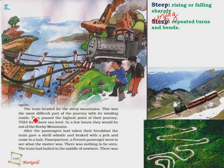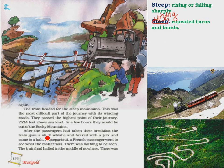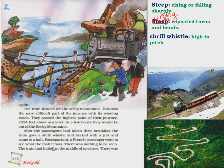After the passengers had taken their breakfast, the train gave a shrill whistle — a very loud, high-pitched sound — and braked with a jerk and came to a halt. Braked means stopped, and halt means stop. Passepartout, a French passenger, went to see what the matter was. The train had halted in the middle of nowhere — there was no station in sight.